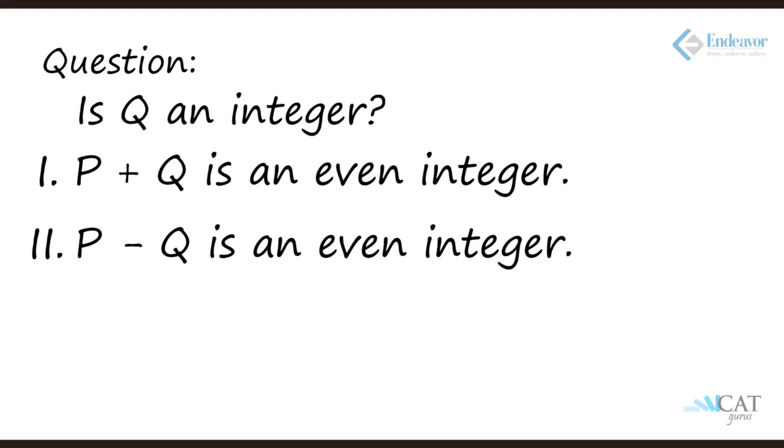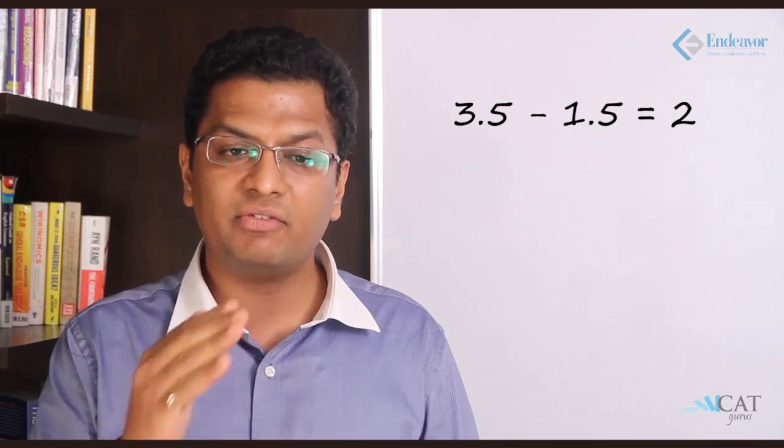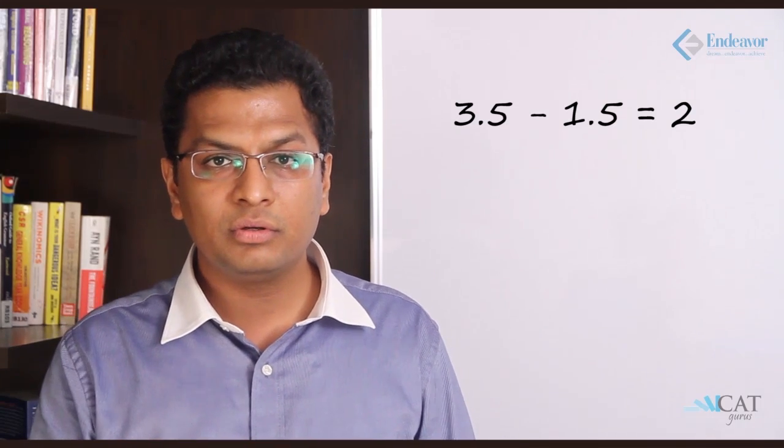Let's look at the second statement: p minus q is an even integer. So p minus q, again even minus even is even, odd minus odd is also even. So p minus q both can be even, both can be odd, or p and q both can be decimals also, like 3.5 and 1.5. So 3.5 and 1.5 will give me 2. From the second statement also I am not able to get the clear answer.